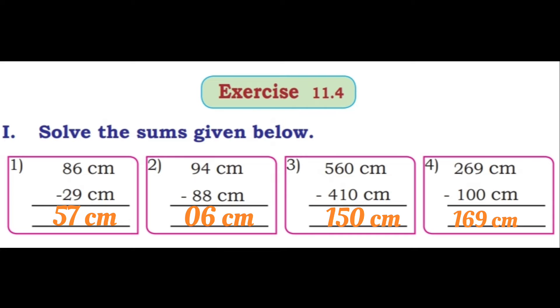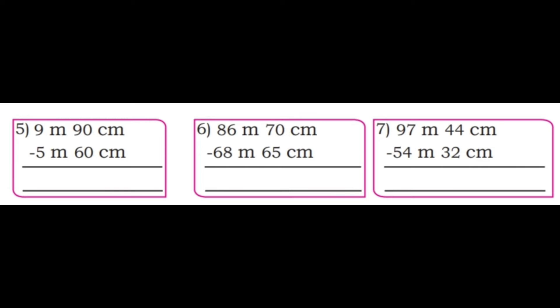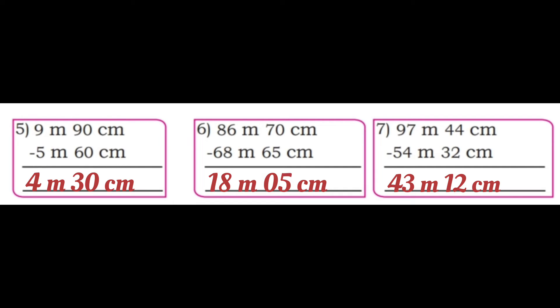Q5: 9 meter 90 centimeter minus 5 meter 60 centimeter. 0 minus 0 is 0, 9 minus 6 is 3, 9 minus 5 is 4. Answer: 4 meter 30 centimeter. Q6: 86 meter 70 centimeter minus 68 meter 65 centimeter. 0 minus 5, need to borrow: 10 minus 5 is 5, 6 minus 6 is 0. Then 6 minus 8, borrow: 16 minus 8 is 8, 7 minus 6 is 1. Answer: 18 meter 5 centimeter.